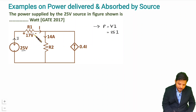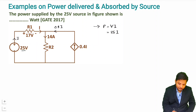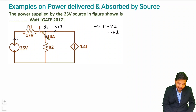Now if you observe this circuit carefully, we have a current source carrying current 0.4I. Here we also have a 14 ampere current, and the current I is present as well. If we apply KCL at node A, we can identify the value of I.